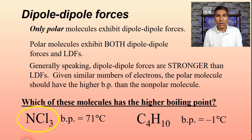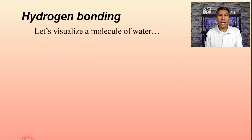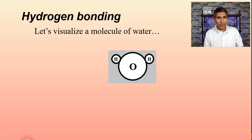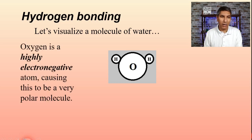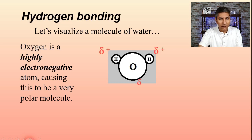Now let's talk about another type of intermolecular force called hydrogen bonding. To think about hydrogen bonding, let's imagine we have a molecule of water. Water has a bent configuration or bent geometry, as we learned back in unit 2. It's a very polar molecule because it has a lopsided electron distribution and oxygen has a very high electronegativity. There's a negative pole on the oxygen side with those lone pairs, and positive poles on the hydrogen side.